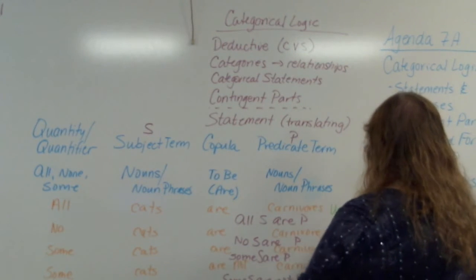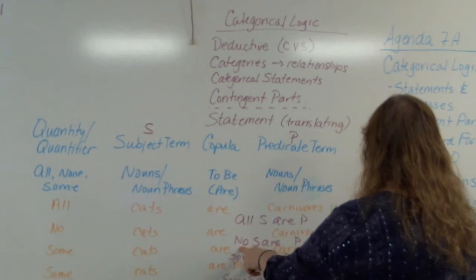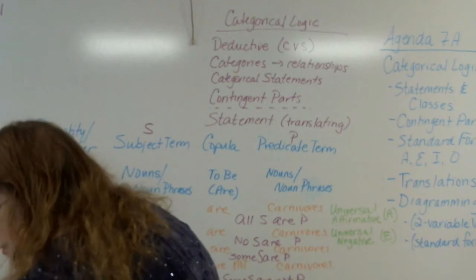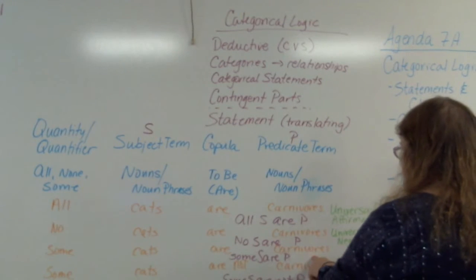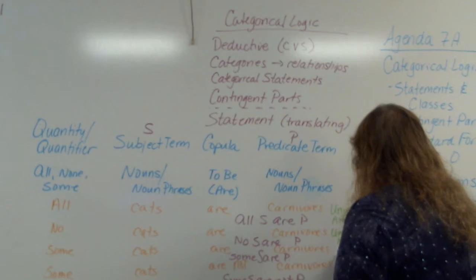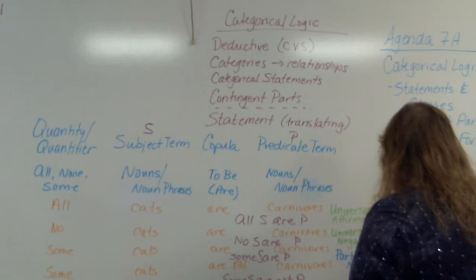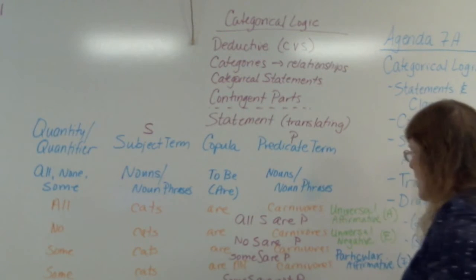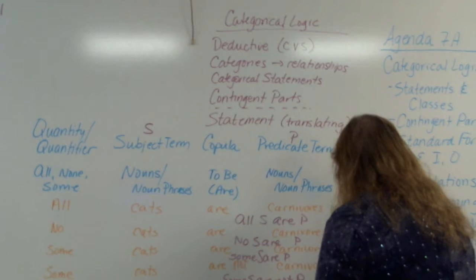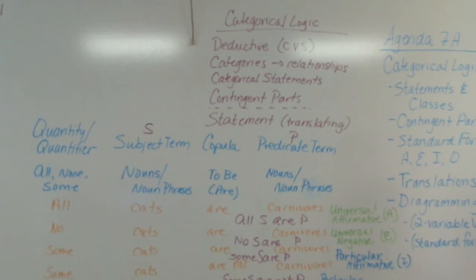'No S are P' is also a universal, but it's a universal negative because of the 'no.' That's our E, our epsilon. When we get down to 'some,' this is not a universal anymore — we're only talking about pieces of the category, so 'some' is a particular. 'Some S are P' is particular affirmative — that's our I, our iota. And 'some S are not P' is a particular negative — that's our O, our omega.